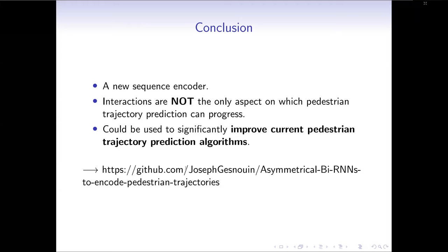In conclusion, the TrashNet++ challenge has been really useful for us because it validated the usefulness of using our asymmetrical BiRNNs as a sequence encoder compared to regular LSTMs or BiLSTMs. And it also shows that there is still room for improvements in sequence encoding, and that interactions are not the only aspect on which pedestrian trajectory prediction can progress. And finally, we believe that the approach that we developed here can be easily implemented and could be an interesting baseline to try. So you can find the code and everything here. Thank you very much.